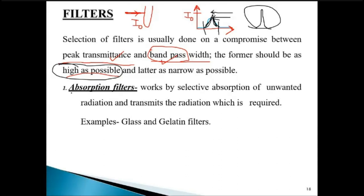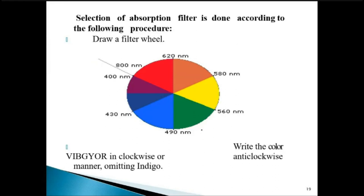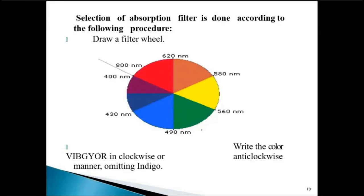The first type is absorption filters. These filters work by selective absorption of unwanted radiation and transmit only the required radiations. Examples include glass and gelatin filters. Depending on which wavelength you want to use for your analysis in the visible range, different filters from a filter wheel are used. The wheel is divided into several sections like a pizza, where each section represents one part of the spectrum.